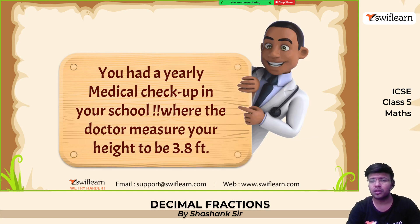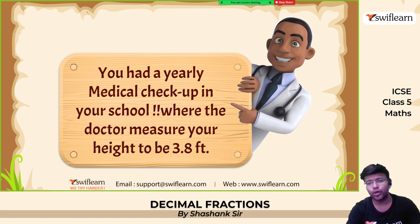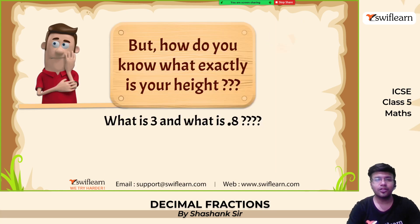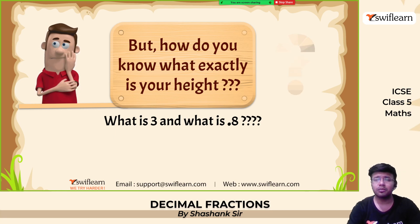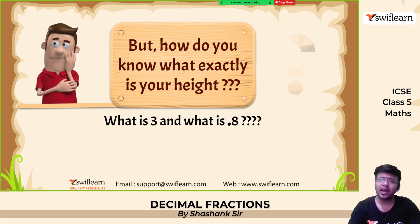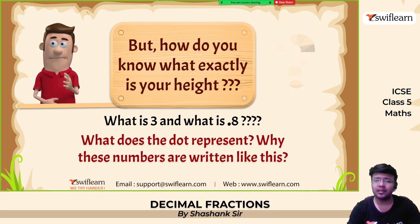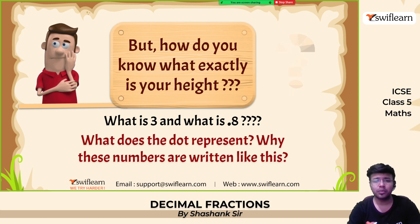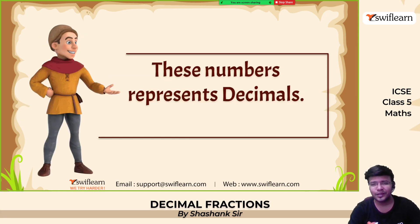Earlier during a medical checkup in your school, the doctor measured your height to be 3.8 feet. Your PTT teacher measured your weight as this many point this many kgs. But do you know, in the height measurement, what is this 3 and what is this 0.8? What does the dot represent? Why are numbers written like this? These numbers represent decimals.